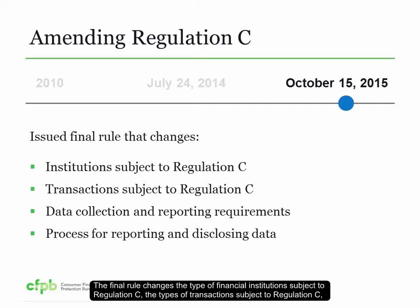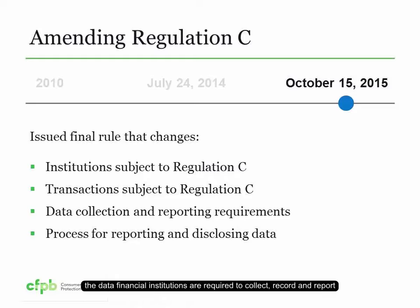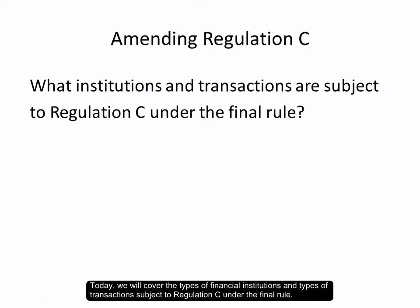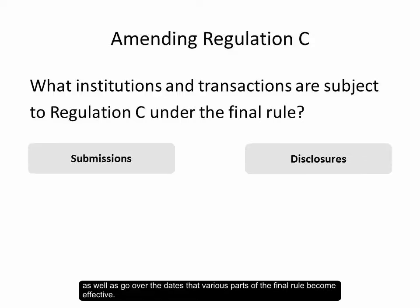The final rule changes the type of financial institutions subject to Regulation C, the types of transactions subject to Regulation C, the data that financial institutions are required to collect, record, and report, and the processes for reporting and disclosing the data. Today, we will cover the types of financial institutions and the types of transactions subject to Regulation C under the final rule. We will also review information regarding changes to the data submission process and disclosures, as well as go over the dates that various parts of the final rule become effective.